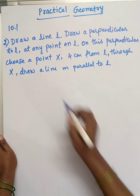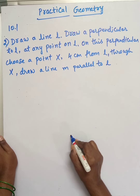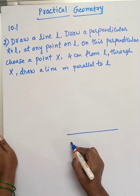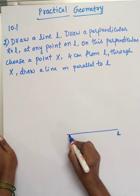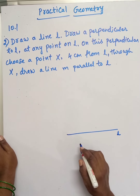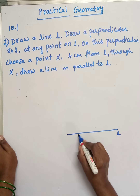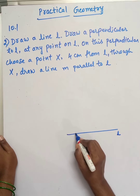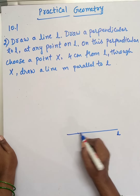First, draw a line L. This line is named L. Then draw a perpendicular to L at any point on L — choose a perpendicular to L.